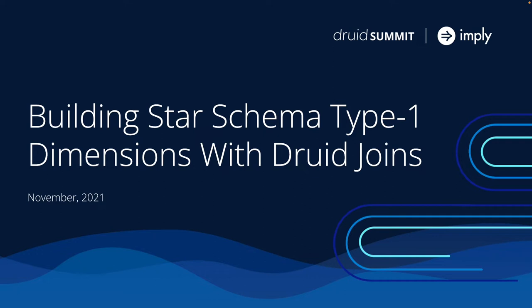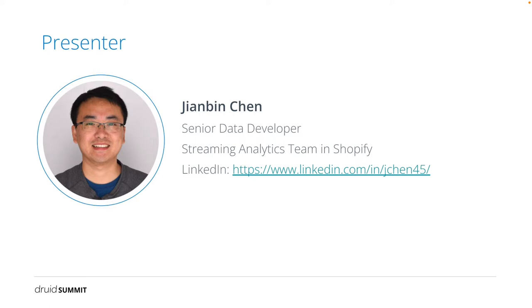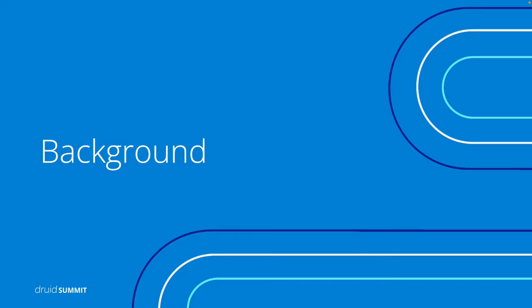Hello everyone. Today we are going to talk about how Shopify is using Apache Judah to solve a specific problem: the slowly changing star schema type 1 dimensions problem. My name is Jian Bingcheng. I am currently a senior data developer at the Shopify streaming analytics team. In the past two years, we have been building our new streaming analytics platform. One of our most recent work is to build the new sales model in the new platform.